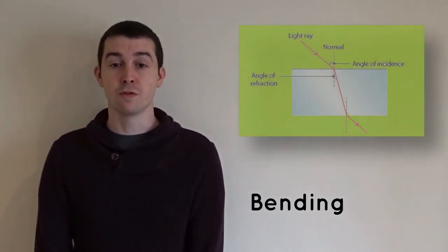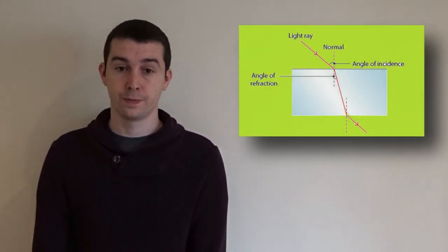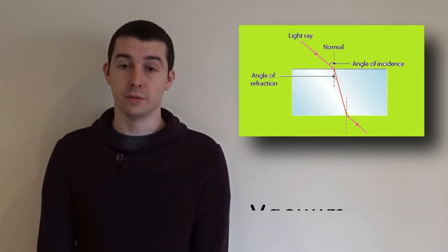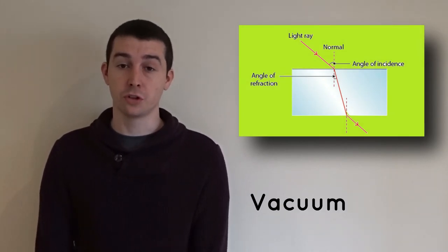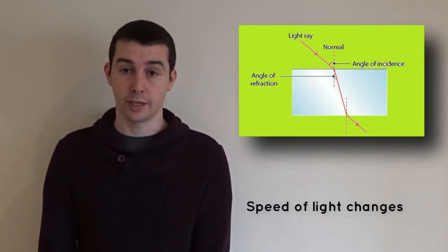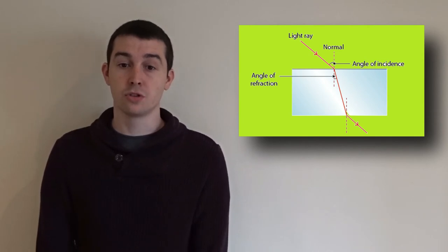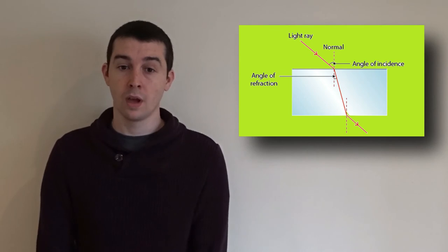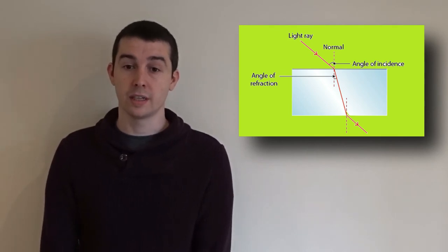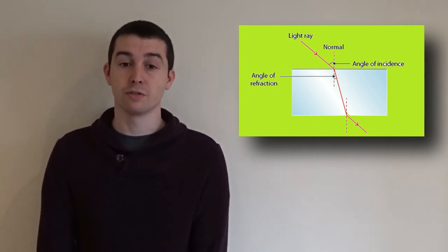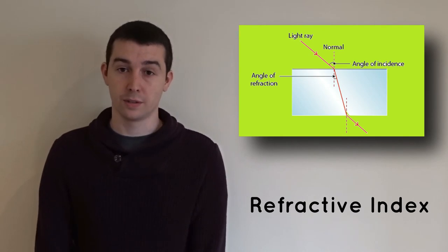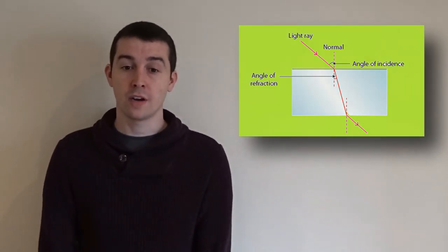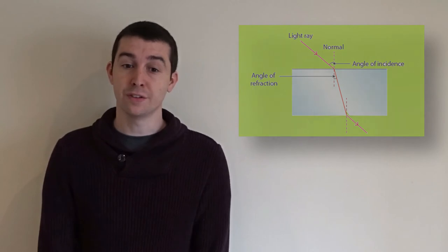Refraction can be described as the bending of light as it moves from one material to another. Light travels through a vacuum at a speed of 3 × 10⁸ meters per second, and travels through materials at a speed less than this. The change in speed of light in an object is known as the refractive index of an object. When light travels from one material to another with a different refractive index, the light rays bend.